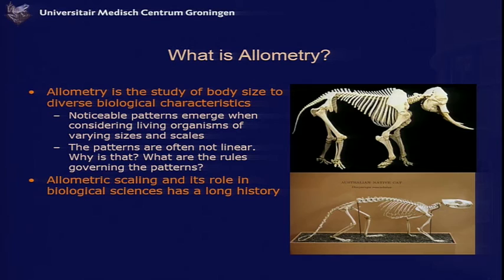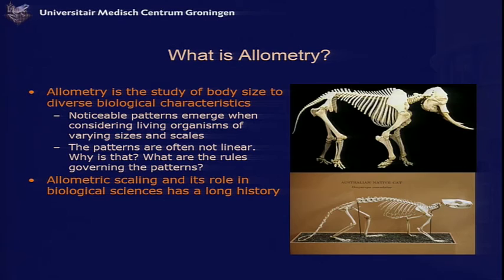What is allometry? What is allometric scaling? Allometric scaling is the study of body size relative to diverse biological characteristics. When you look at nature and different scales and sizes, patterns emerge which you might not initially notice. If you look at the elephant skeleton and the cat skeleton, the cat's bones are thin with a very high aspect ratio, while the elephant's bones are very thick, and a greater percentage of body weight is taken up by bone than for a cat. What are these patterns? Why do they exist in nature? What are the rules governing them? This is what allometric scaling is about.